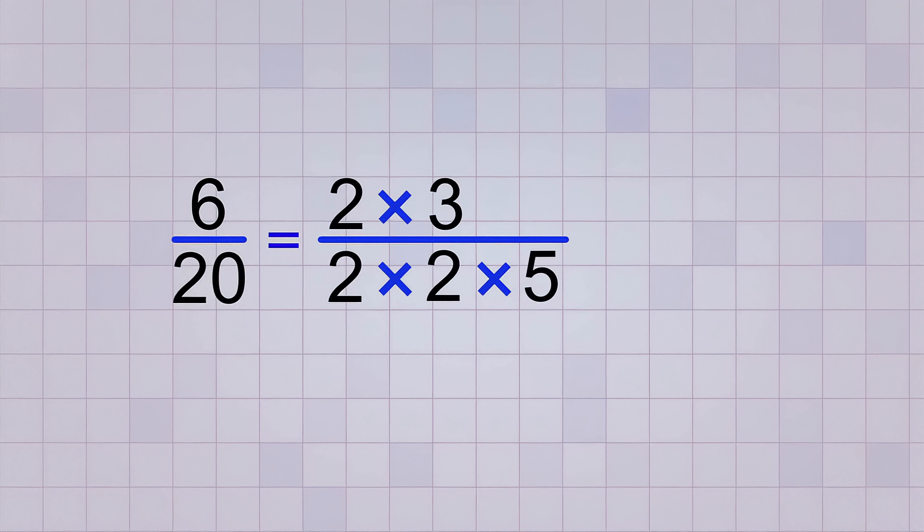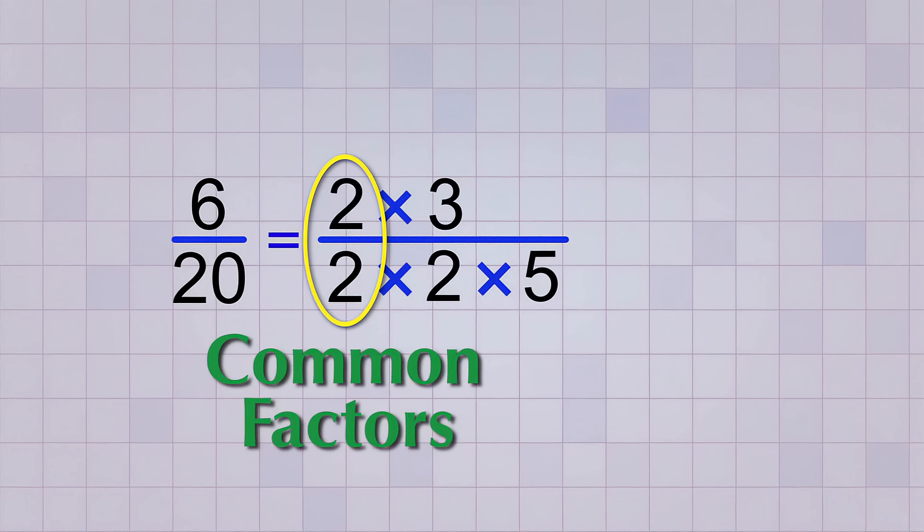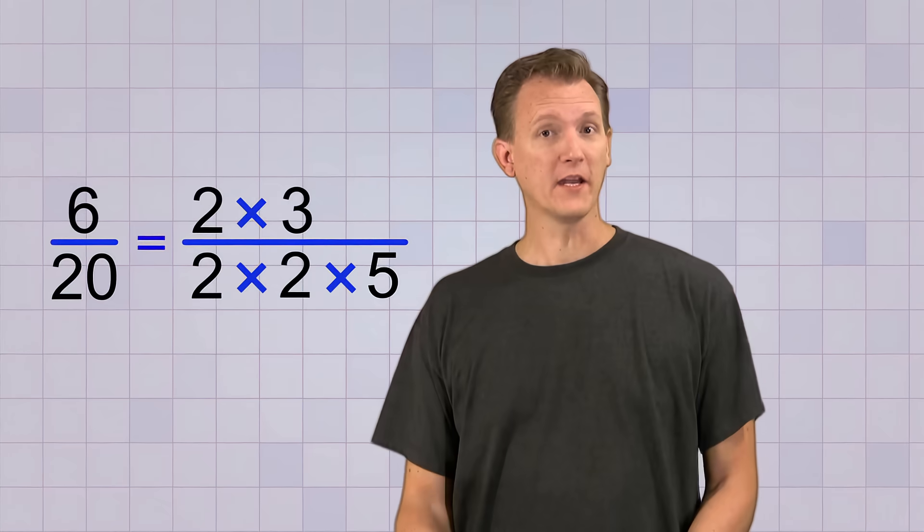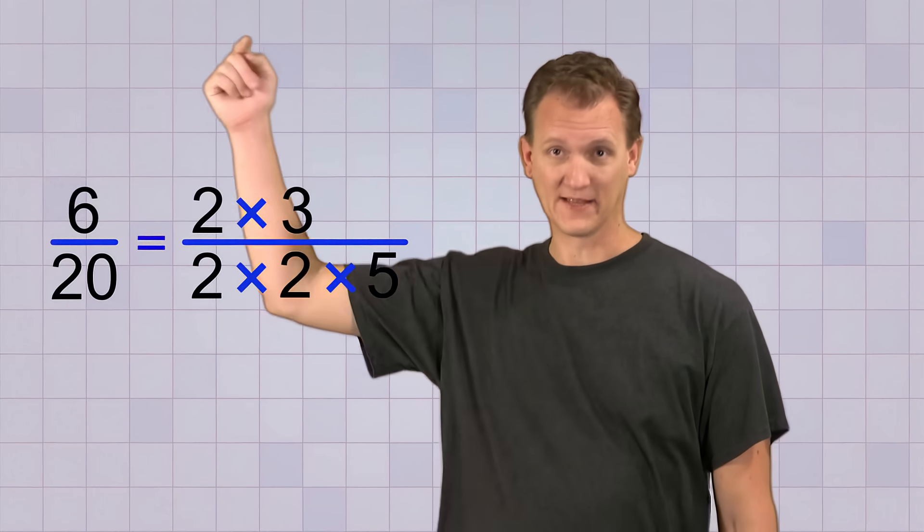Next, look to see if any of the factors are the same on the top and bottom. If they are, then we call them common factors because they're something that both the top and bottom have in common. If you find a pair of common factors, you can cancel them out. Just draw a line through them, like this.